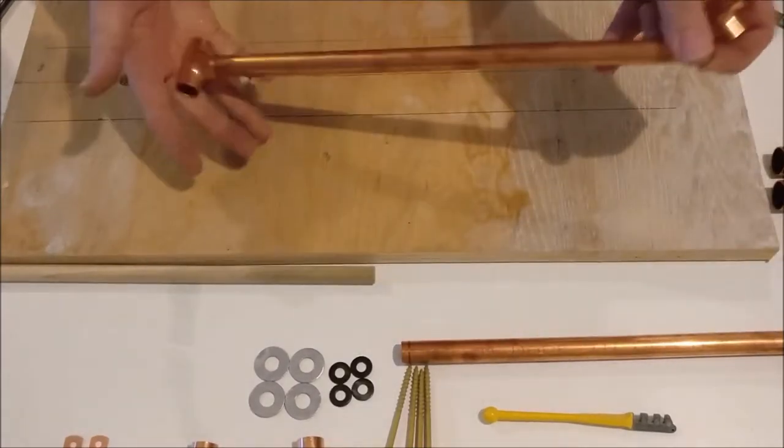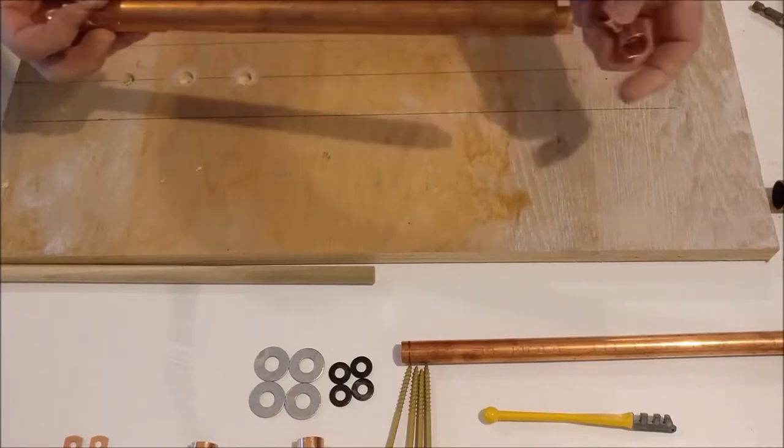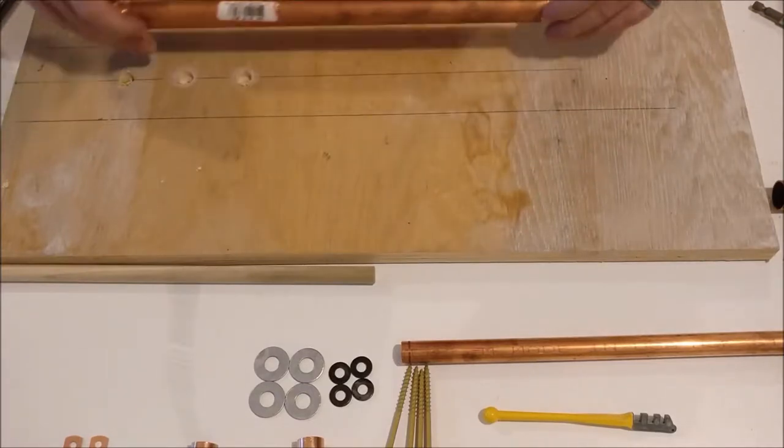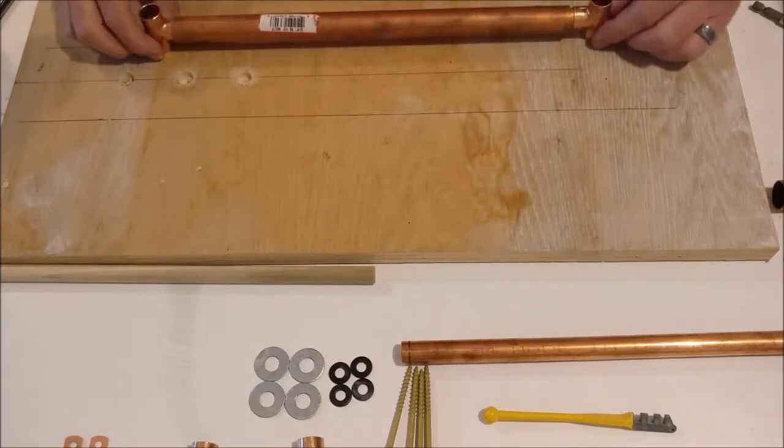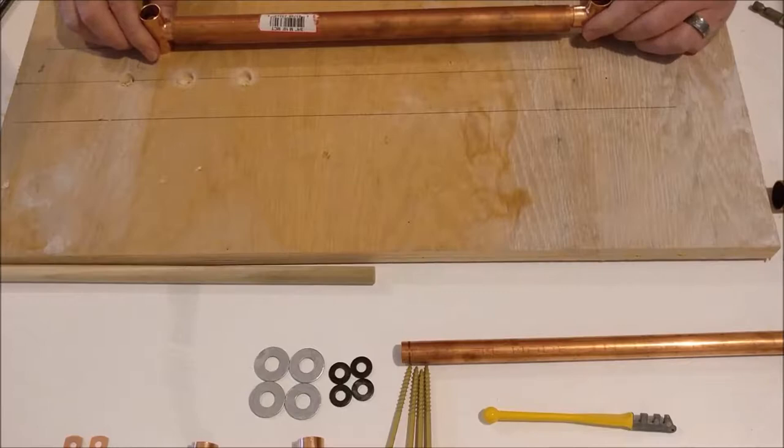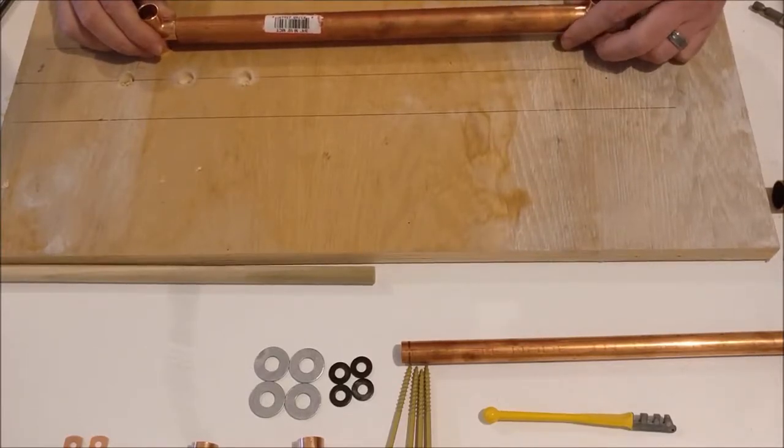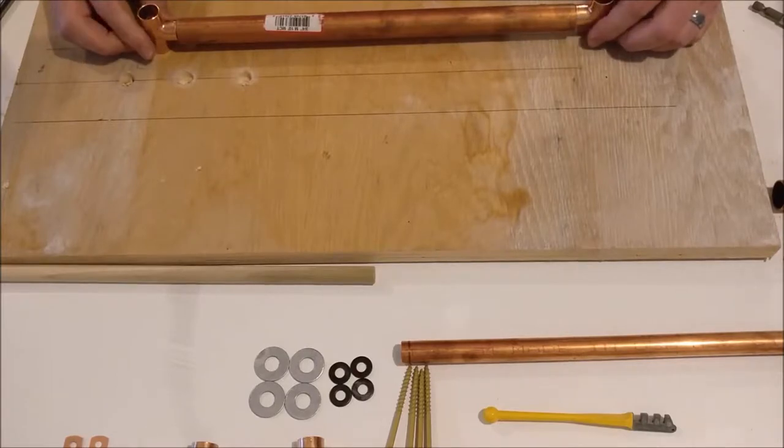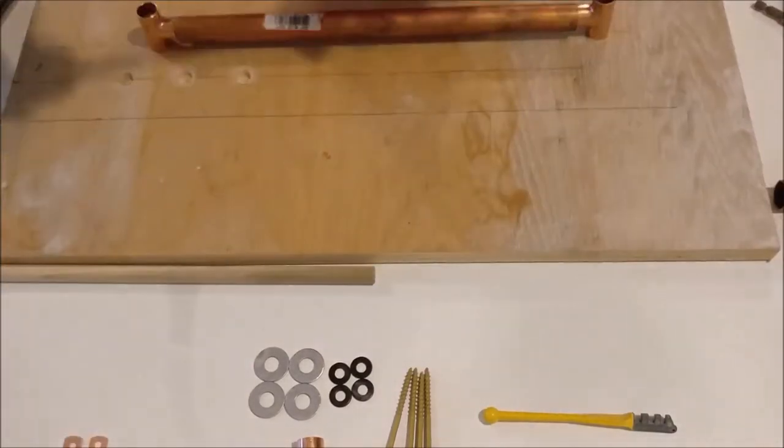Next up we are going to assemble the copper pipes. So it's a half inch copper pipe T with a 14 inch half inch copper pipe with a 3 quarter inch 13 inch copper pipe put over top of that and then connected to another half inch T. The 3 quarter inch copper pipe will act as a giant roller basically.